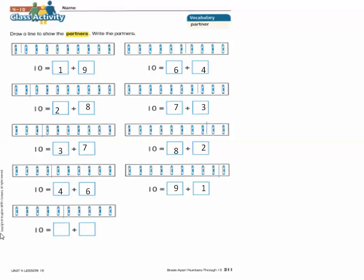The last one — we will draw a line after five crayons. Then we will count the crayons that come before this line. Count with me: one, two, three, four, five. Write five. After that we will count the crayons that come after this line: one, two, three, four, five. Write five. So five plus five equals ten. Five and five are partners of ten.